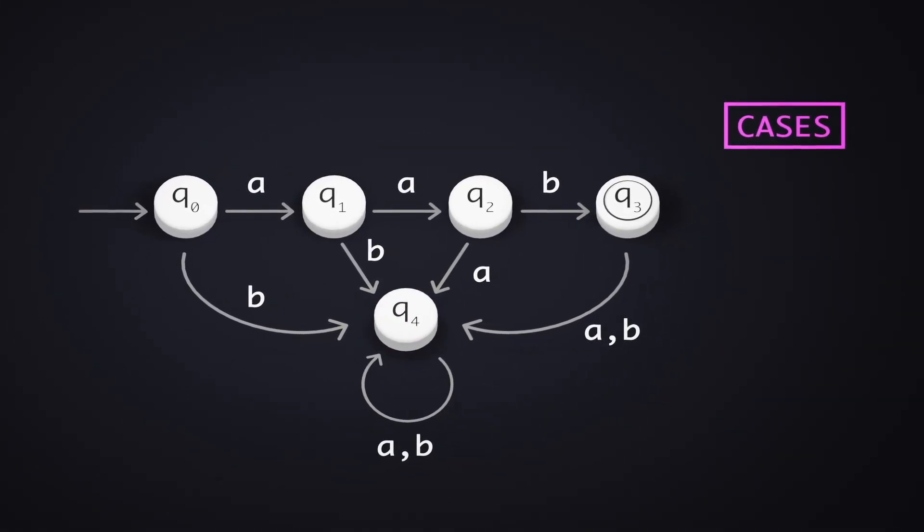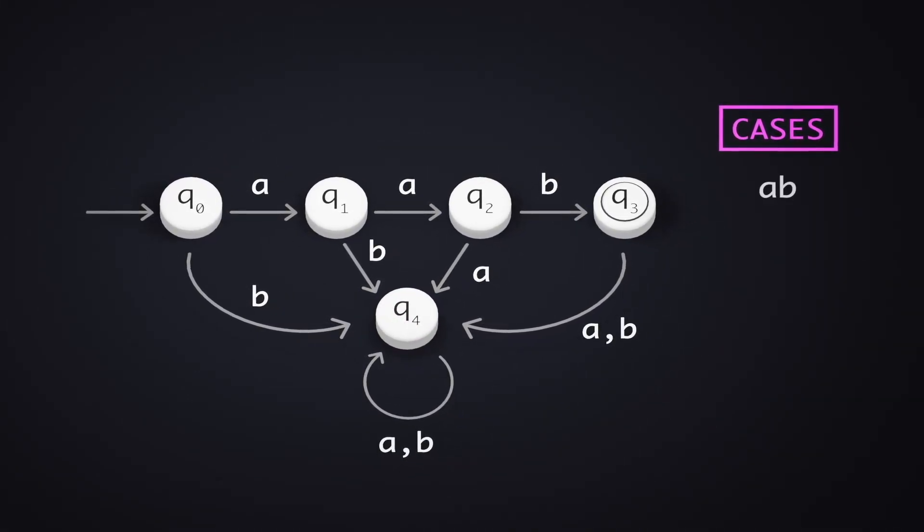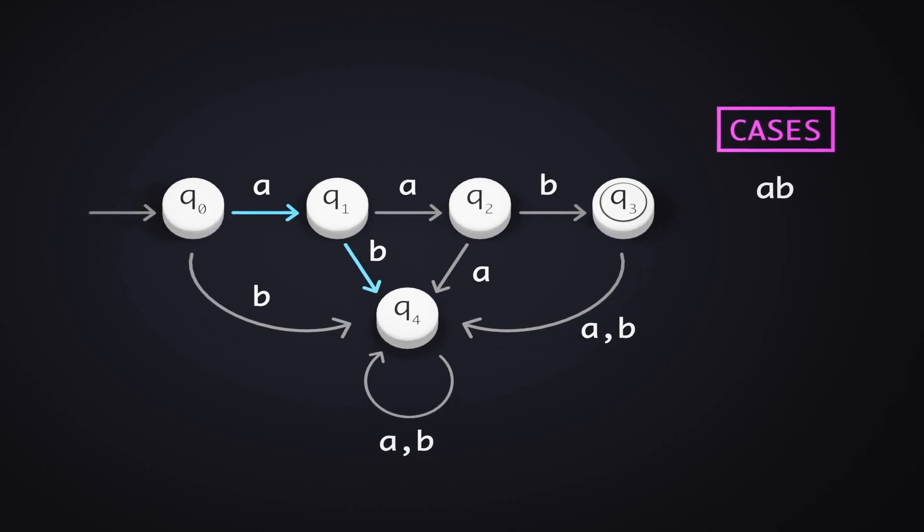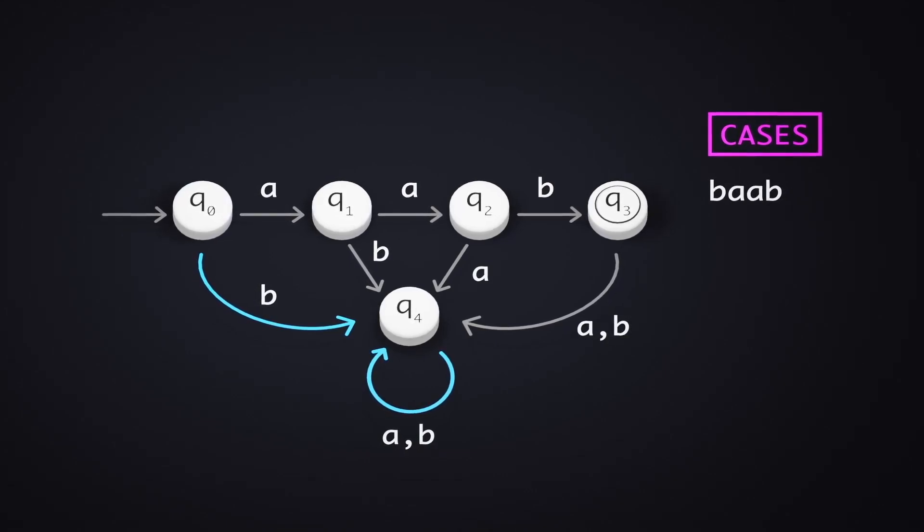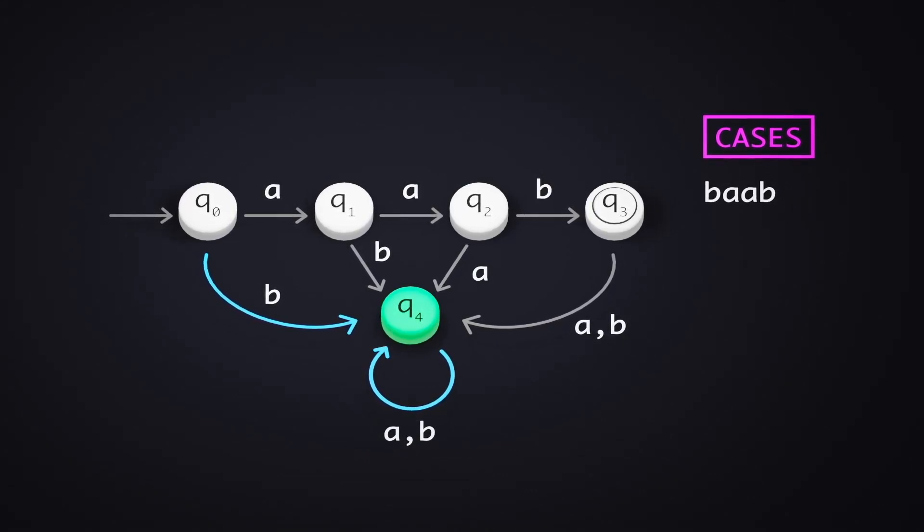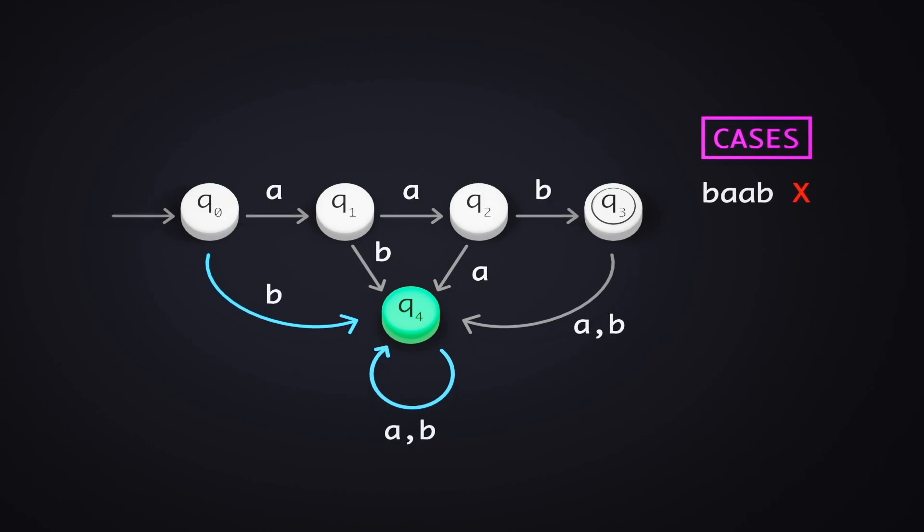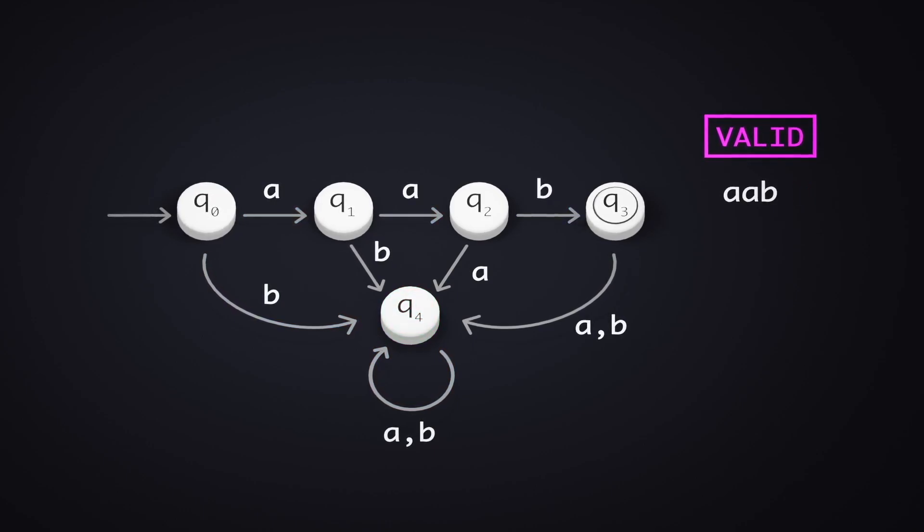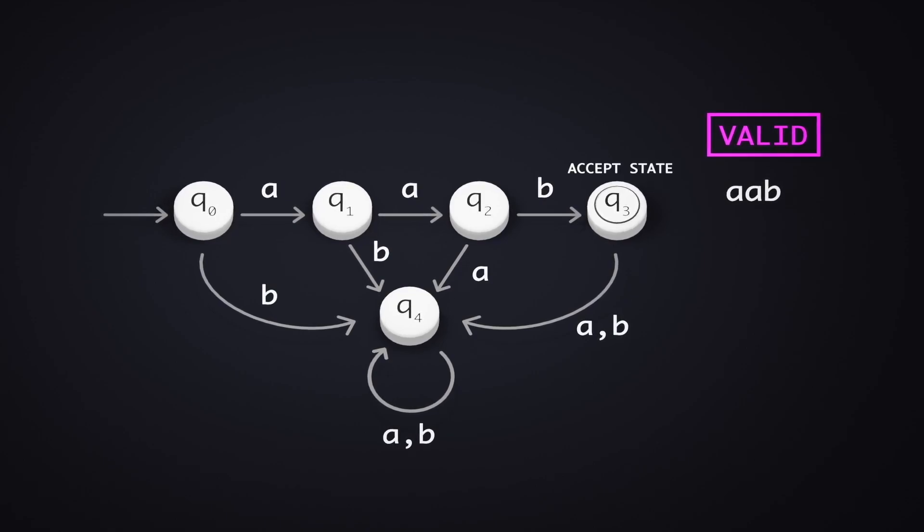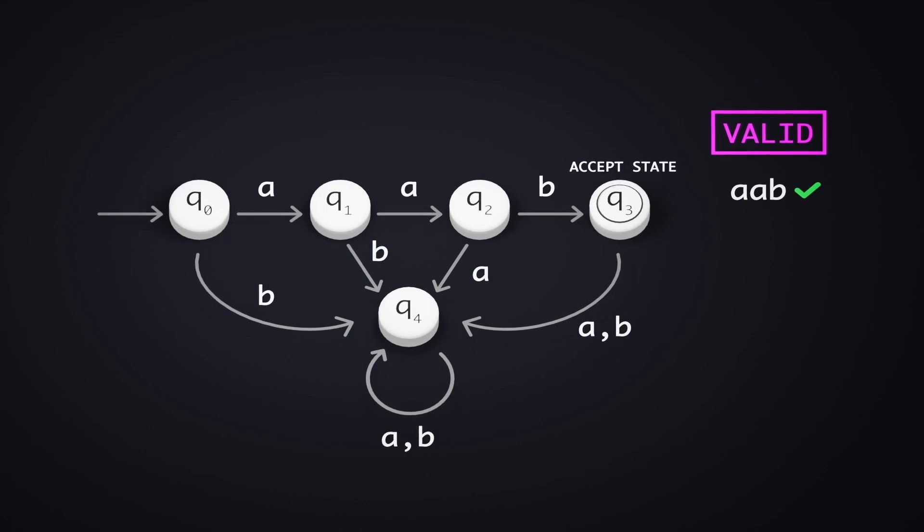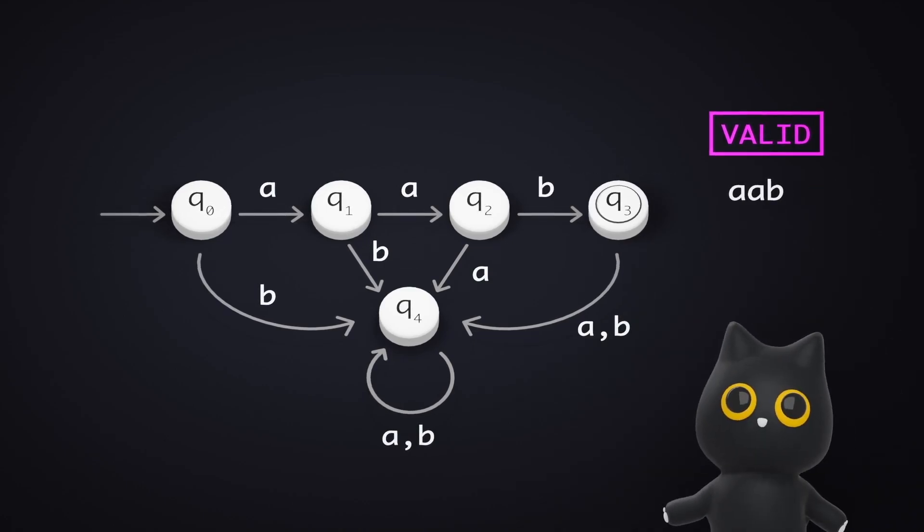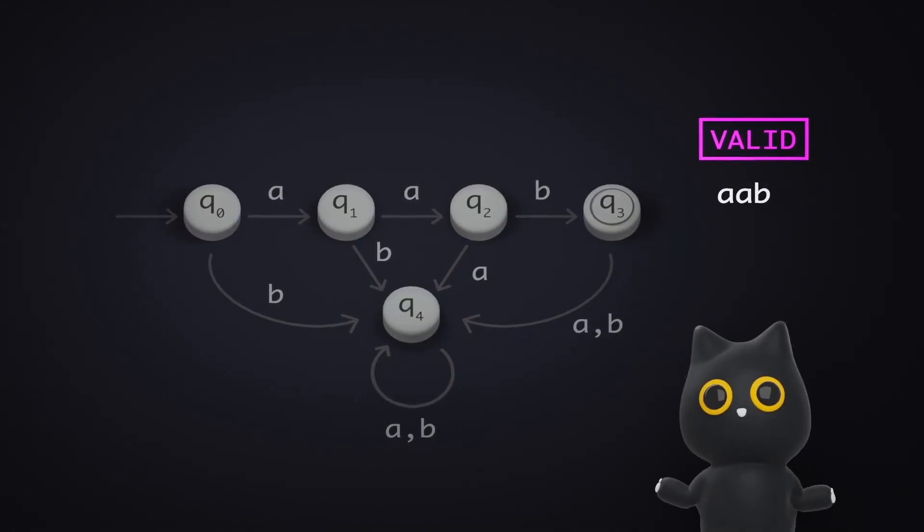Trying out the various test cases, we see that AB leads us from Q0 to Q4, which we reject. BAAB leads us from Q0 to Q4 and gets us stuck there, and hence, we reject too. We see that only AAB gets us from Q0 to Q3, which is the accepting state, and hence, the only string the machine accepts. There you have it! A regular expression to DFA.